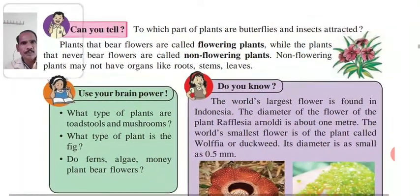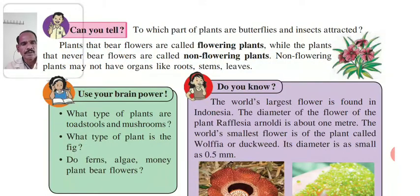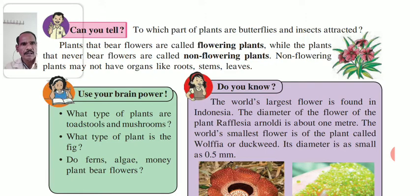In this lecture, we will see the next part. Can you think about which part of plants butterflies and insects are attracted to? Butterflies and insects are attracted towards the flowers of the plants.